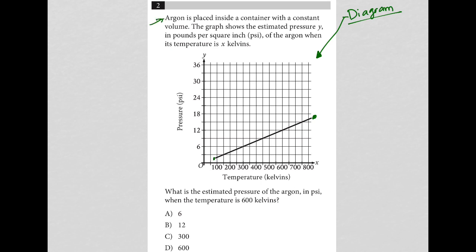The question says argon is placed inside a container with a constant volume. The graph shows the estimated pressure, y—so our y-axis is pressure—in pounds per square inch of the argon when its temperature is x Kelvin. So the x-axis is temperature in Kelvins.